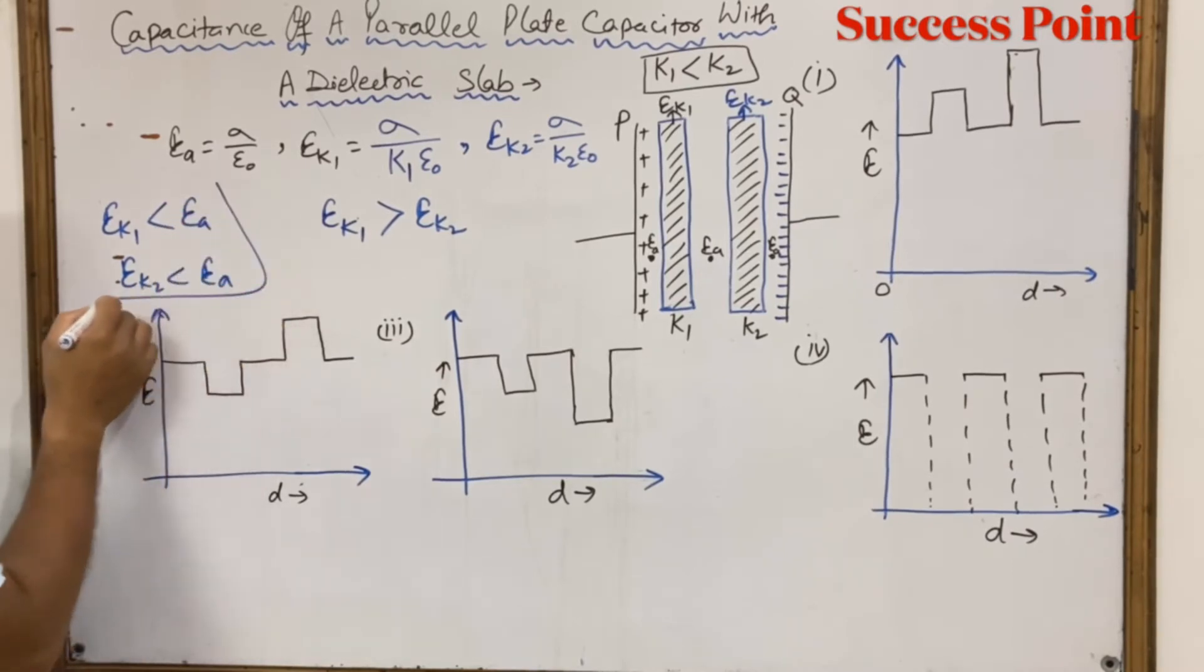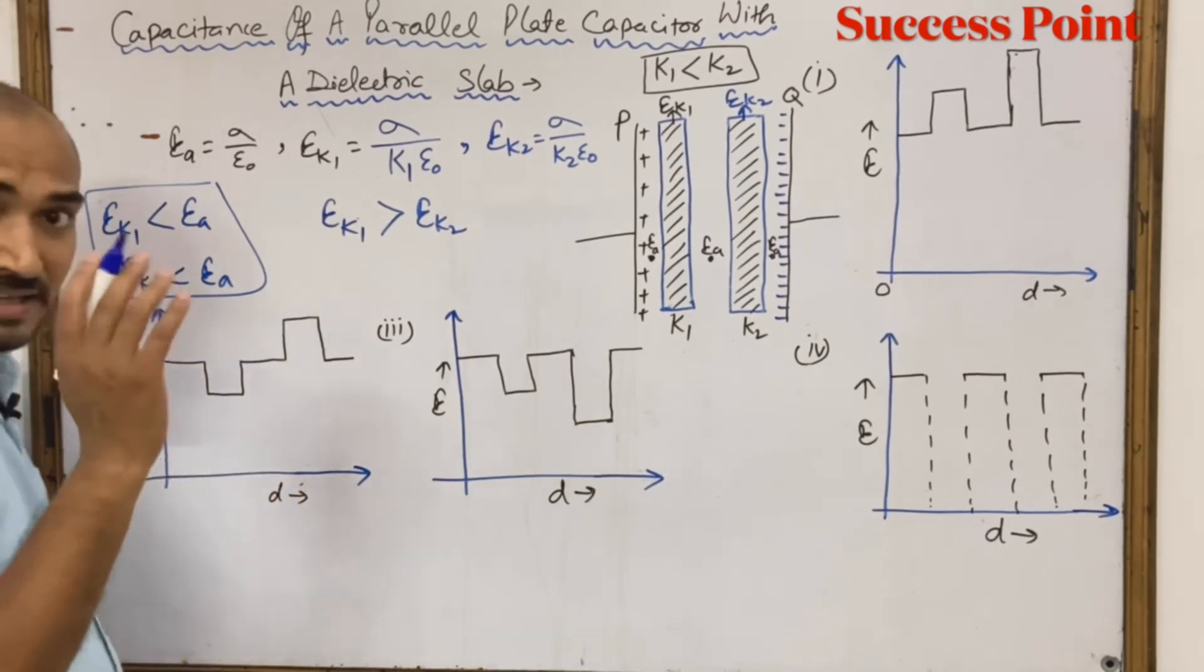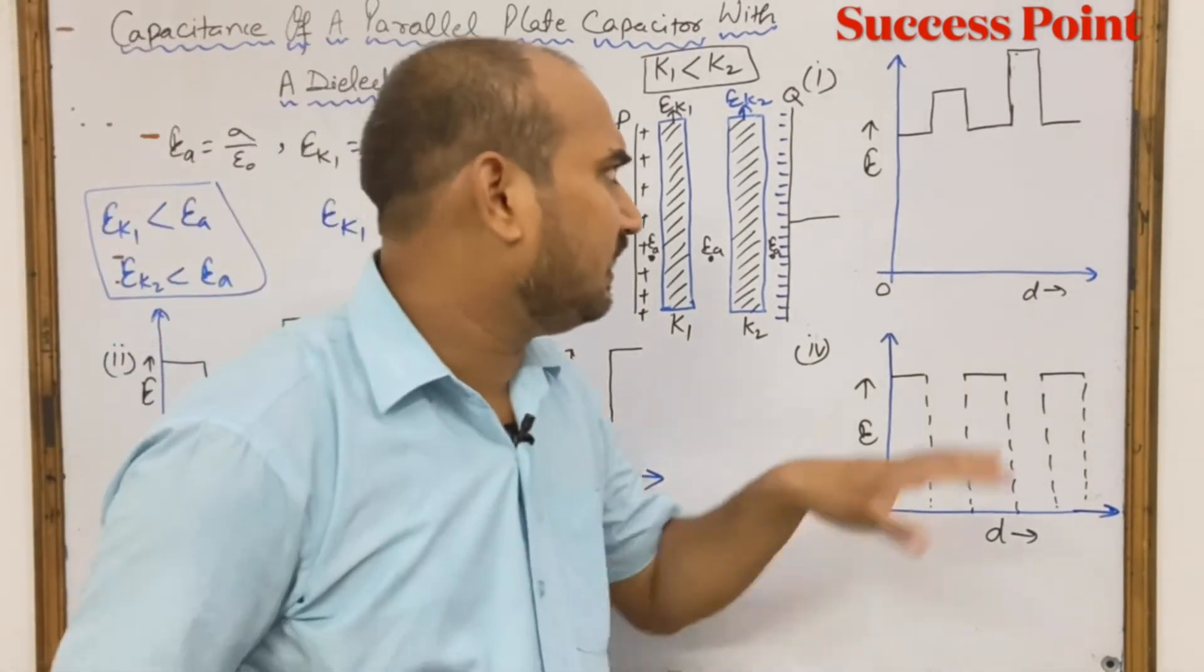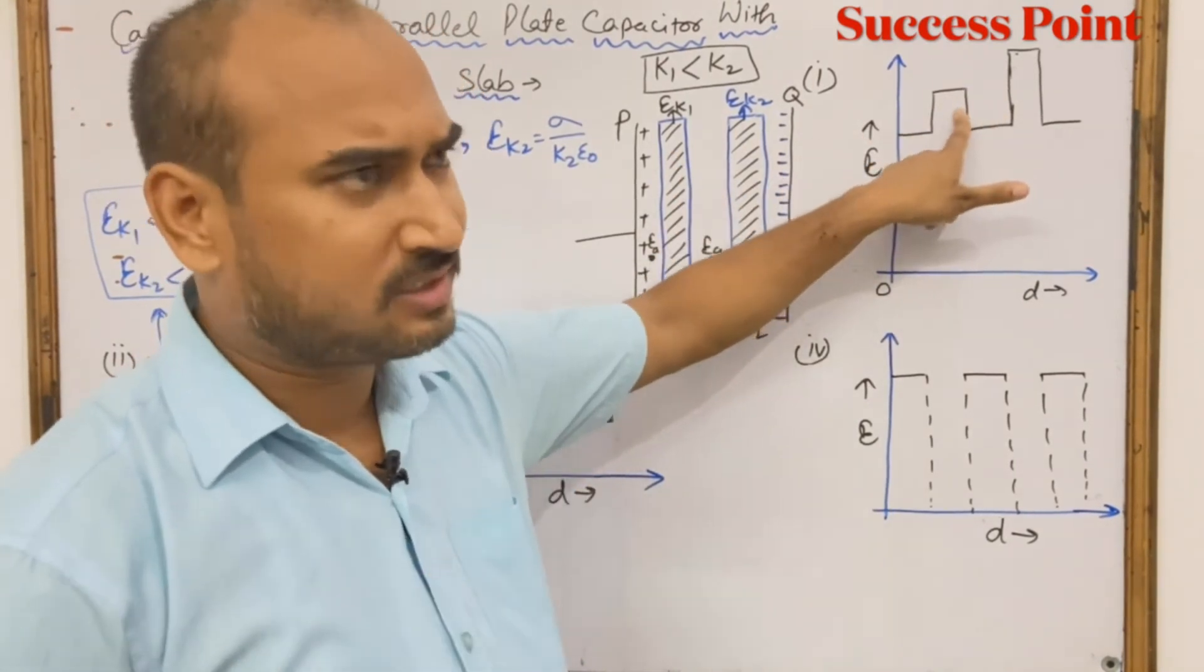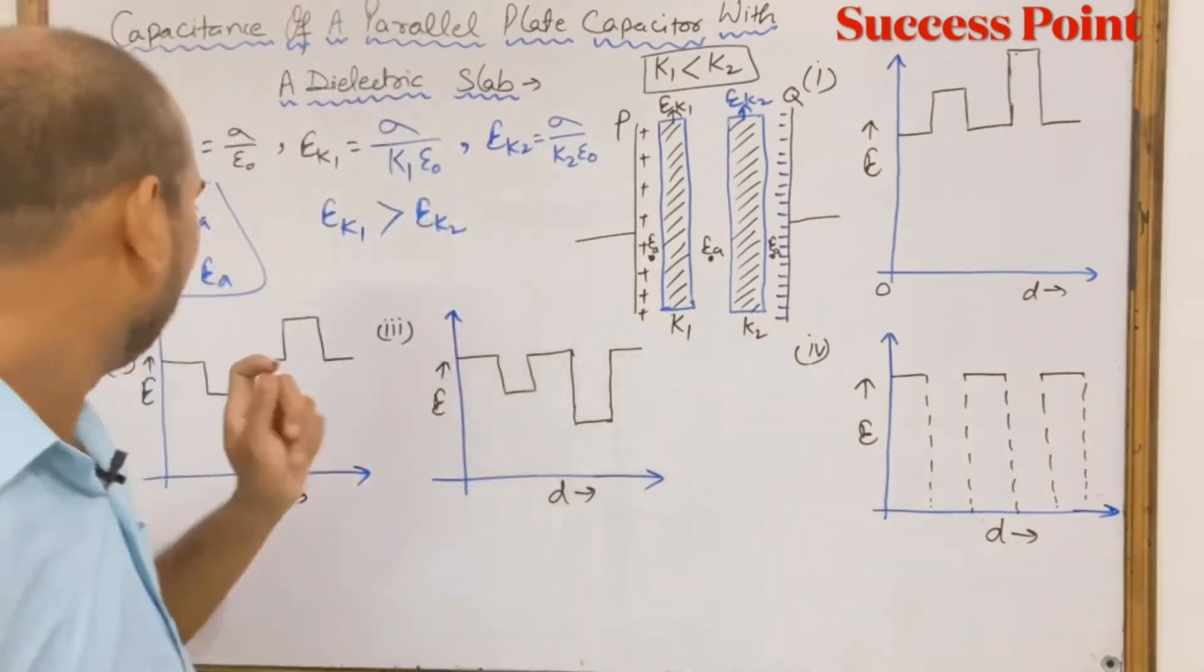This means the air electric field should be highest. If we check the first graph, here the air electric field is shown, then inside the dielectric substance the electric field increases. This cannot happen, so this first graph is wrong.